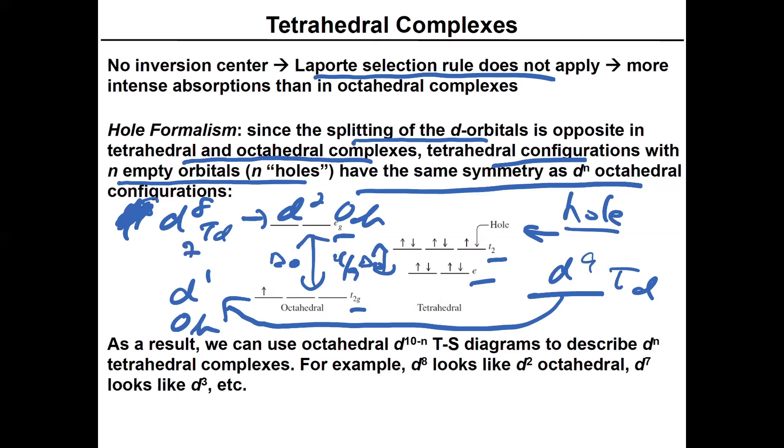Six goes to D4 and so on and so forth. So basically, you can use the octahedral D^(10-N) Tanabe-Sugano diagram to describe the D^N tetrahedral complexes. So that's another exercise that's very common—using the Tanabe-Sugano diagrams for an octahedral molecule, you can do it for the corresponding tetrahedral molecule with N number of holes.